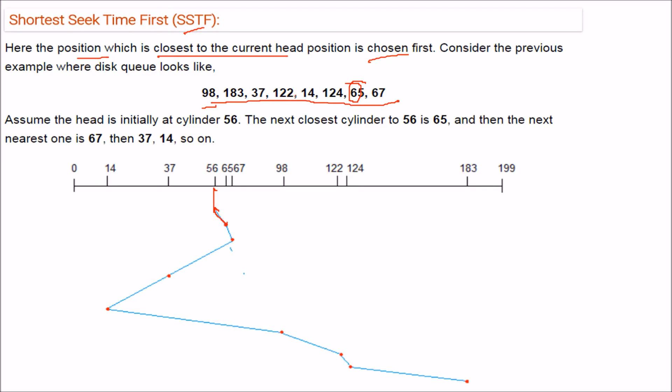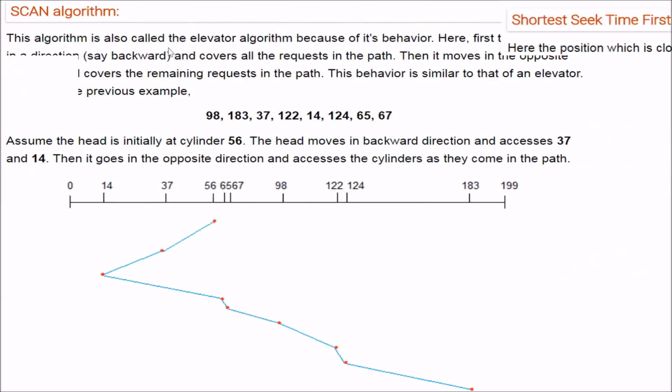So it will go to 65. Then just we have to find the difference, difference with all these. The least difference it will go. So here next is 67, it will go to 67. Then the next will be 37. What we are doing? We are trying to find out the difference between where it is and the next one. Next can be any of these which it has not reached yet. So the difference which is the least it will be. So next it will come 37, go to 37. Then 14, and likewise.